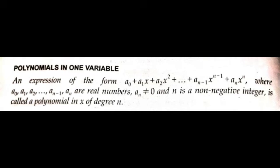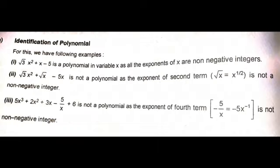Now it is very important to identify polynomials. The first example is √3x² + x − 5. It is a polynomial in variable x as all the exponents of x are non-negative integers. The second example is √3x² + √x − 5x. It is not a polynomial, as the exponent of the second term — that is, √x, which can be written as x^(1/2) — is not a non-negative integer.